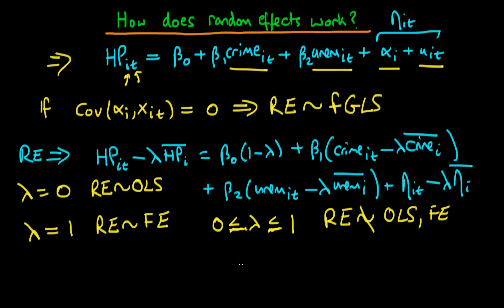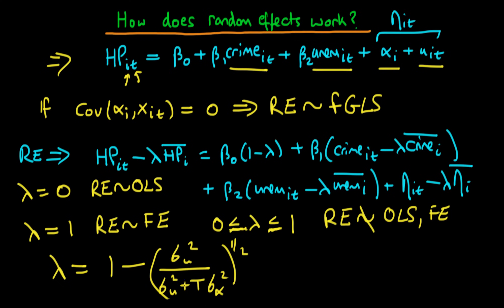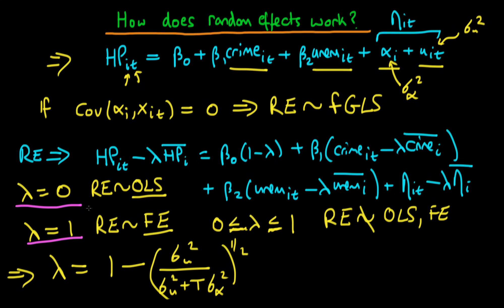So what is this mysterious parameter lambda? Lambda is equal to one minus sigma_mu squared divided by sigma_mu squared plus T times sigma_alpha squared, all to the power of one half. Here sigma_mu squared is the variance of our idiosyncratic error term, and sigma_alpha squared is the variance of our unobserved term alpha. Now that we have this expression for lambda, we can discuss the circumstances under which lambda collapses to zero (random effects equivalent to OLS) or to one (random effects equivalent to fixed effects).